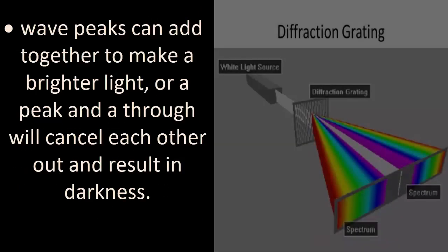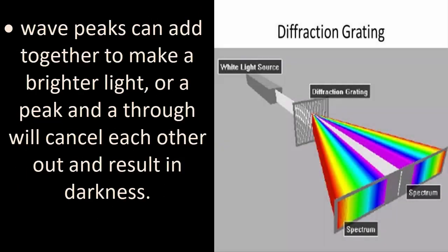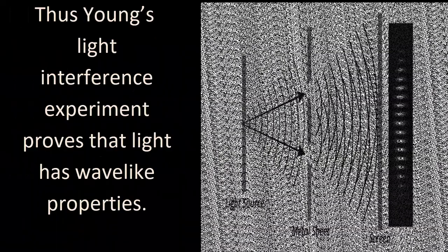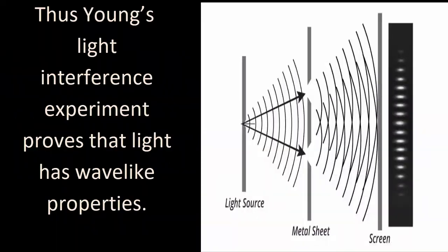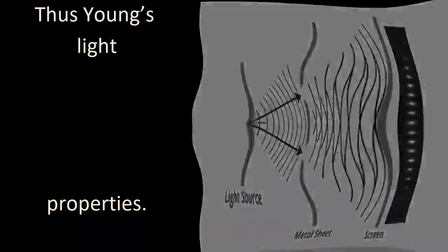Wave peaks can add together to make a brighter light, or a peak and trough will cancel each other out and result in darkness. Thus Young's light interference experiment proves that light has wave-like properties.